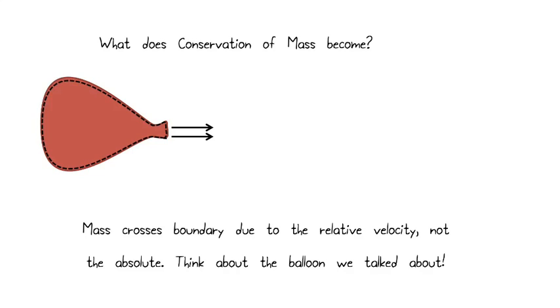Let's look at what that's going to do to our conservation of mass. I'm just going to replace my velocity with w, because what I really care about is that relative velocity. What does the mass that crosses the boundary look like from the perspective of the control volume itself, of the balloon? The mass crosses the boundary due to the relative velocity, not the absolute.